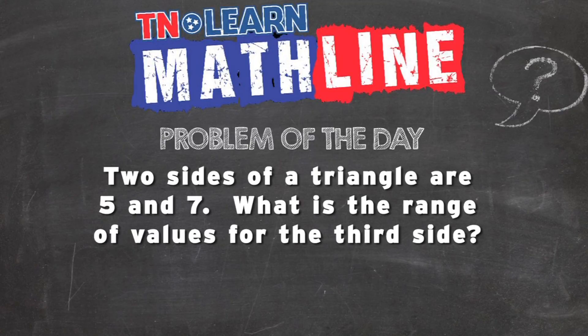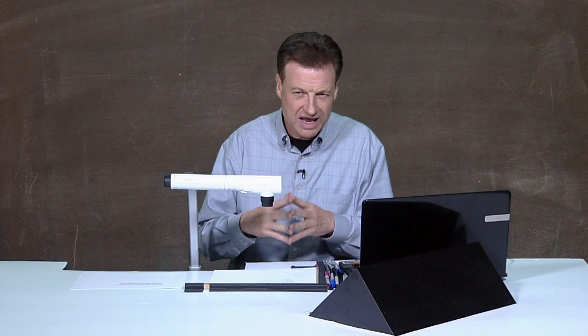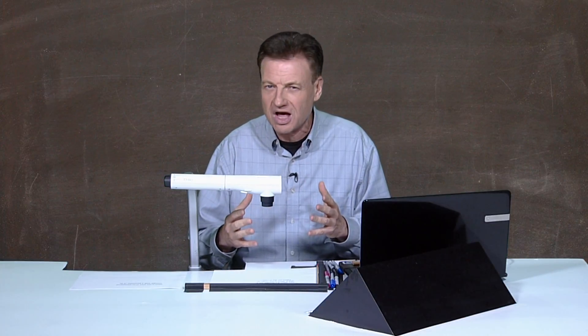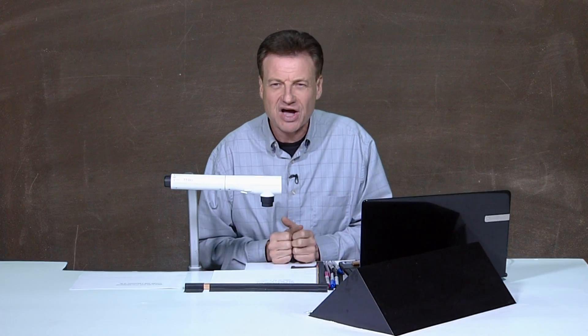Two sides of a triangle are five and seven. What is the range of values for the third side? All right, so two sides of the triangle. We've got five and seven. We're looking for what could happen on the third. And notice it says range. That means it's not just one answer to this problem. There's more than one thing going on here. So let's take a look and see what we've got going here.